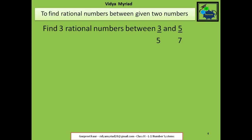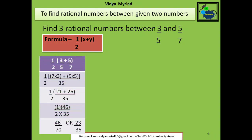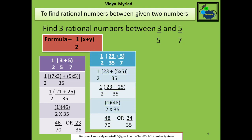Next let us do one more example. Here X is 3 upon 5 and Y is 5 upon 7, and I need to find out 3 rational numbers. The formula is 1 upon 2 multiplied by (X plus Y). So: 1 upon 2 multiplied by (3 upon 5 plus 5 upon 7). Take the LCM and solve it. I get 46 upon 70, which I can reduce to the lowest term: 23 upon 35. Now I will take 23 upon 35 as one of my numbers to find the second rational number. So: 1 upon 2 multiplied by (23 upon 35 plus 5 upon 7). You can take the other combination also — 3 upon 5 plus 23 upon 35 — that is also correct.